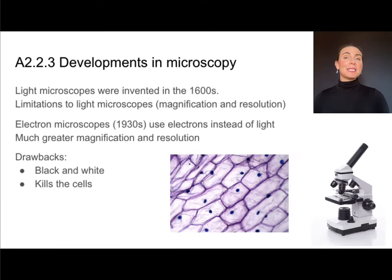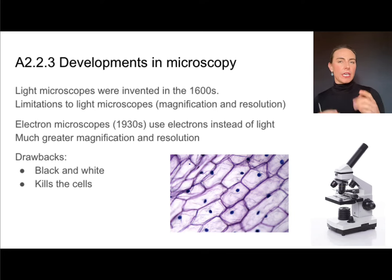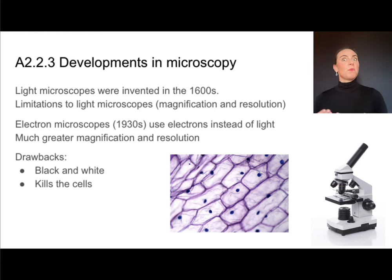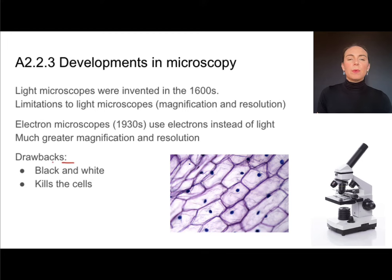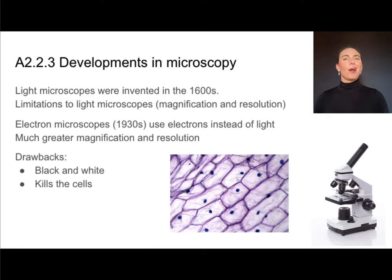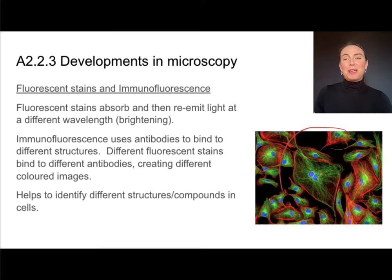Light microscopes have been around a really long time — the first ones actually used a candle. They're great for many things, but there are limits: relatively low magnification and relatively low resolution compared to more modern types of microscopy. The newer electron microscopes do offer more detail, but they have drawbacks: they only produce black-and-white images, and we have to kill the sample in order to use one. If you want to look at living things, you should use a light microscope. In this image, we can really see the difference between what a light microscope provides versus more modern techniques.